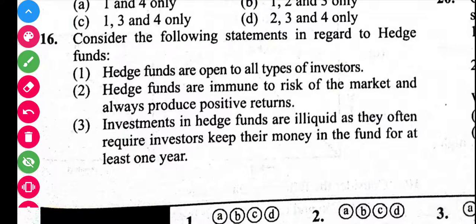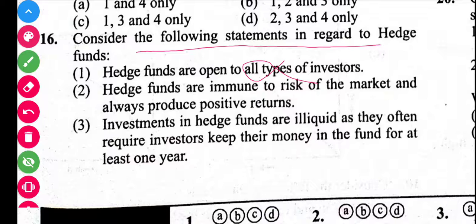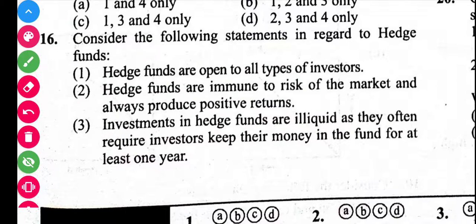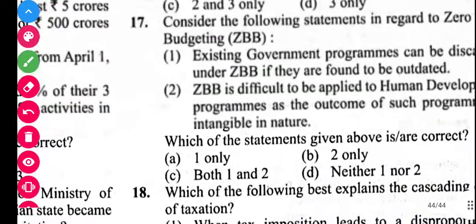Next question is related to hedge funds. Hedge funds are not open to all types of investors — they are open only to certain types of investors. Hedge funds do not always produce a positive return; they may produce negative returns also. Investment in hedge funds is illiquid as they often require investors to keep their money in the fund for at least one year. Only statement 3 is correct.